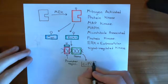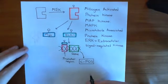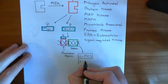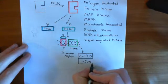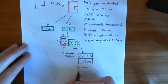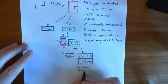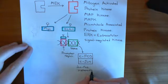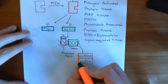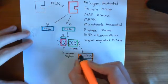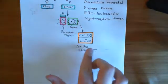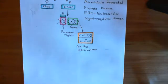C-FOS forms heterodimers with another protein known as C-JUN. When more C-FOS is made, it dimerises with C-JUN to form a C-JUN/C-FOS heterodimer. Like MYC, this is a very powerful mitogen — it causes the cell to divide. So the final end products of the MAP kinase ERK pathway are MYC transcription factors and C-FOS/C-JUN heterodimers.